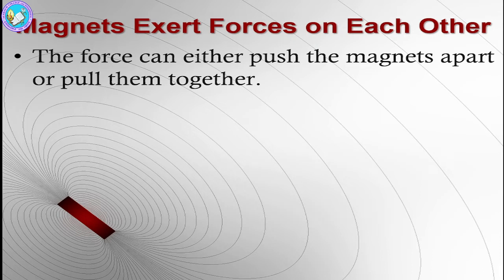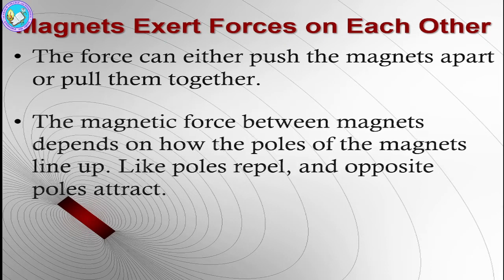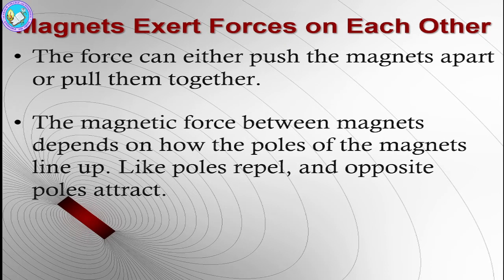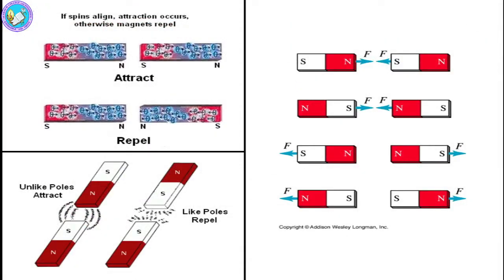If you push the magnets apart or pull them together, consider what force will result — that is an important point. The magnetic force between magnets depends on how the poles of the magnets line up, like similar or opposite poles. When a field is applied to the poles, the direction of the electrons will be aligned in a particular direction and will be moving.